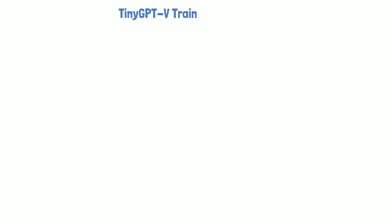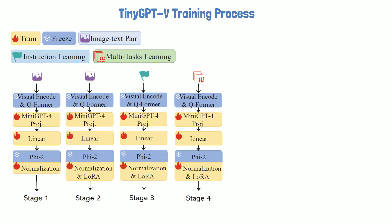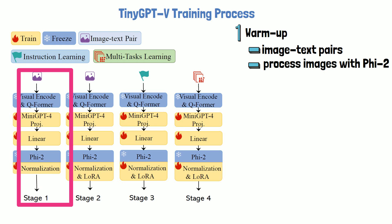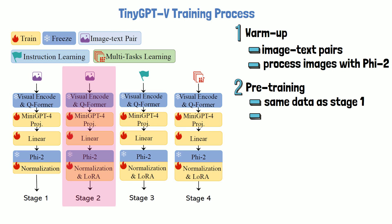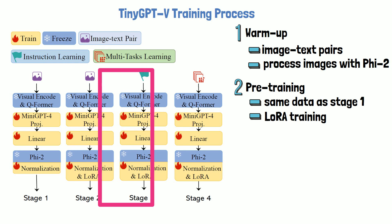The training process consists of four stages, as shown in a figure from the paper. The first stage is a warm-up stage, where the model is trained using image-text pairs to let PHY2 process output from the projection layer and generate relevant text. The second stage is pre-training, using the same data as stage 1, but now LoRA weights are included and trained alongside the projection layers.